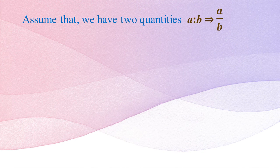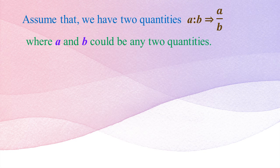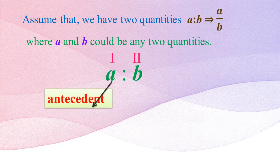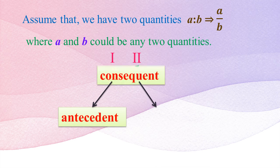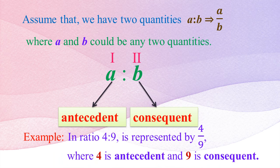Assume that we have two quantities a and b. We can write their ratio as a fraction: a divided by b, where a and b are any two quantities. In the ratio a is to b, 'a' is the first term called the antecedent and 'b' is the second term called the consequent. For example, in the ratio 4 is to 9, written as 4/9, 4 is the antecedent and 9 is the consequent.